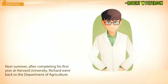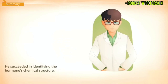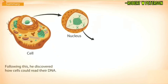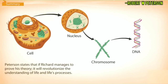As a next step in the project, Ebright grew cells from the monarch's wing. The following summer, after completing his first year at Harvard University, Richard went back to the Department of Agriculture. He succeeded in identifying the hormone's chemical structure, and following this, he discovered how cells could read the DNA. Peterson states that if Richard manages to prove his theory, it will revolutionize the understanding of life and life's processes.